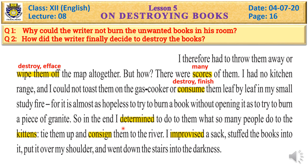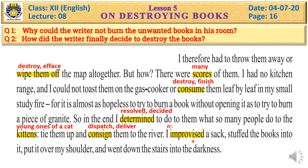So in the end I determined — made a firm resolution — to do to them what so many people do to kittens, the young ones of a cat. Just as people tie kittens in a sack and throw them away, the writer finally thought: tie the books up and consign them — deliver, throw — to the river. I improvised a sack, stuffed the books into it, put it over my shoulder, and went down the stairs into the darkness.